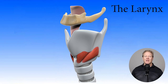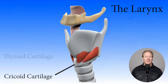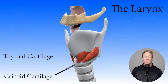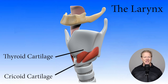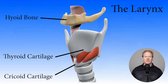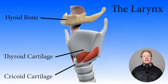The cricoid cartilage lies right here, and the thyroid cartilage is situated on top of the cricoid cartilage. The hyoid bone, technically not part of the larynx, is positioned immediately above the thyroid cartilage right here.